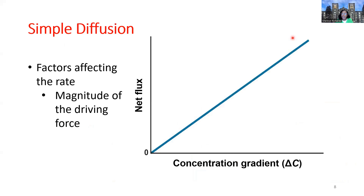Looking at this graph, the concentration gradient is on the X-axis and net flux is on the Y-axis. We see a linear relationship: as the concentration gradient increases, the net flux — the rate of movement and accumulation of particles — increases in a directly proportional relationship. This goes on indefinitely: as the concentration gradient gets bigger, so too does the rate of simple diffusion.